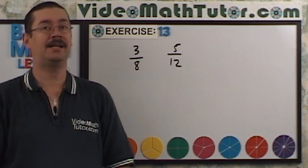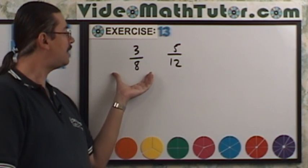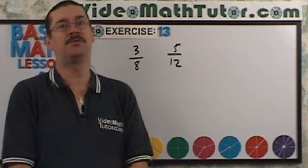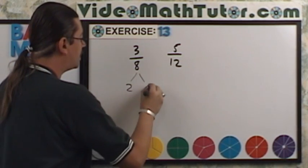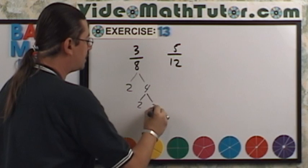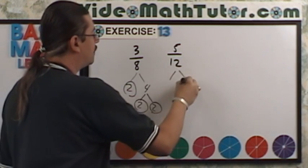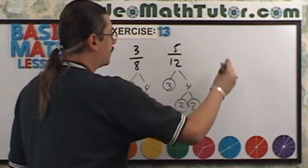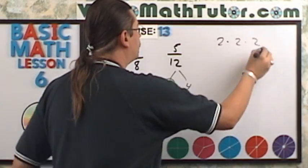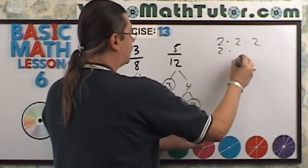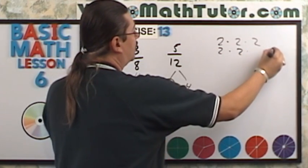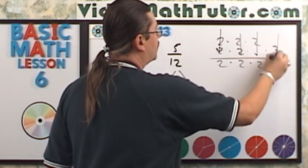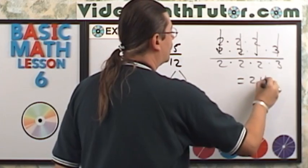For exercise 13, find the LCD between 3 eighths and 5 twelfths. Start with factor trees: 8 is 2 times 4, then 2 times 2; 12 is 3 times 4, then 2 times 2. Create the columns: 2 times 2 times 2 from the first group, then 2 times 2 from the second, with 3 placed to the side. So it's going to be 2 times 2 times 2 times 3, giving us an answer of 24.